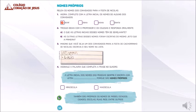Atividade de número 1. Agora, complete com a letra inicial dos nomes de alguns dos convidados. No primeiro quadradinho, que letra nós devemos colocar para formar o nome de um convidado? Gabriel. Que letra vai no quadradinho? G para formar Gabriel.